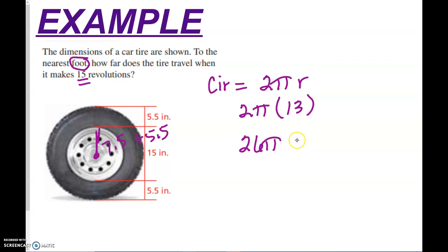So it looks like we have 26 pi for your circumference. Now, we have to multiply that by 15 revolutions. And this is going to get us our answer in inches. But we don't want inches. We want feet.